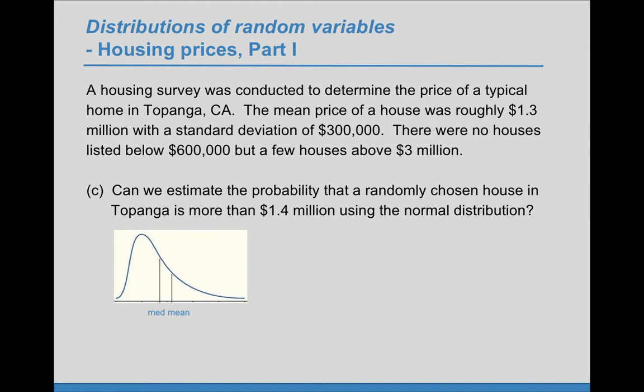Part C: Can we estimate the probability that a randomly chosen house in Topanga is more than $1.4 million using the normal distribution? When we think about a randomly chosen house, we think about randomly selecting one value from this population of values.